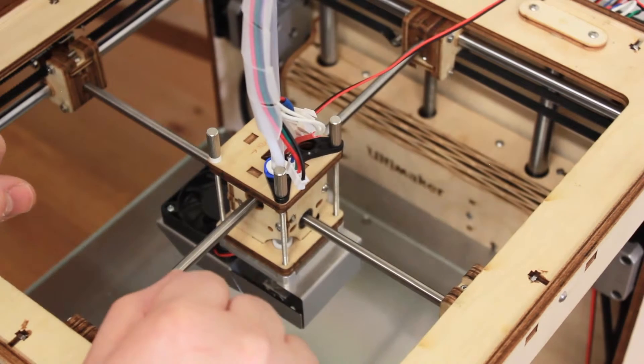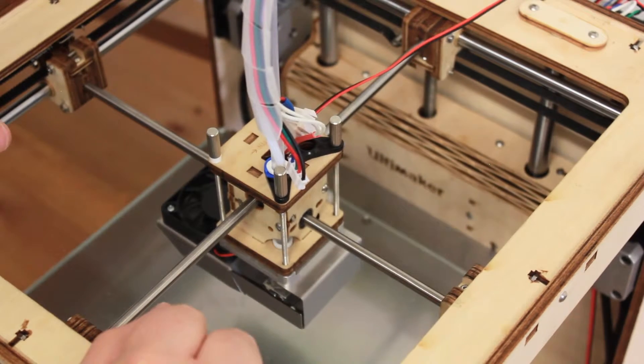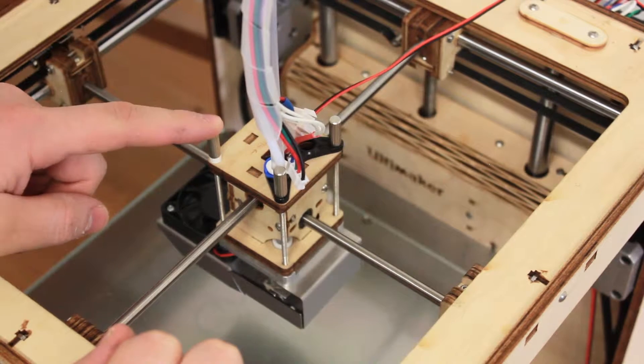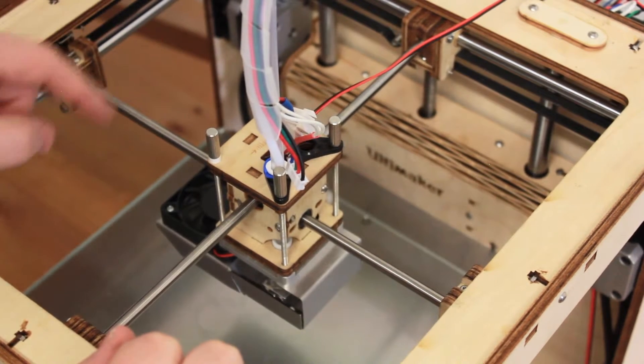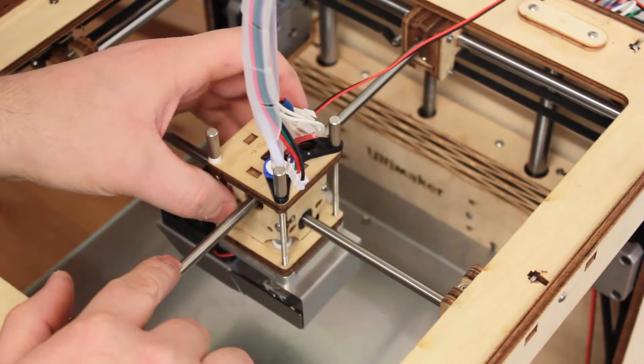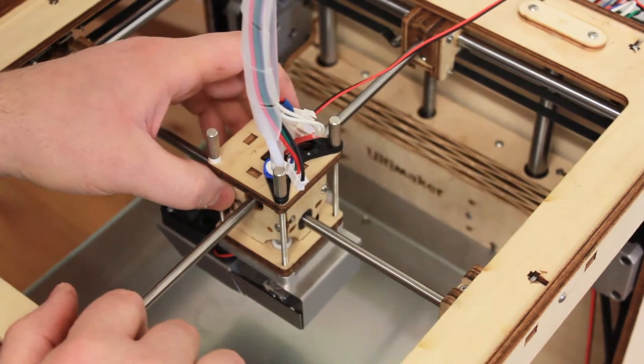Okay, now that you print the bracket, the first thing you want to do is to remove the carriage from the printer. To do that, you will have to remove the rods and after that the carriage itself will be removed easily.